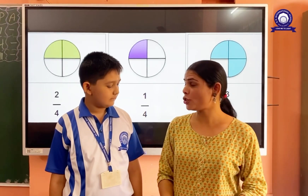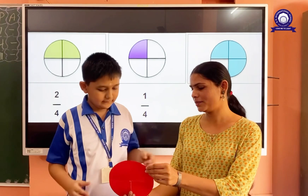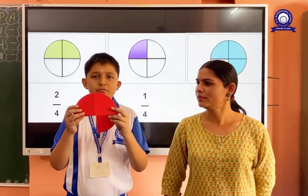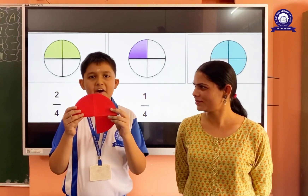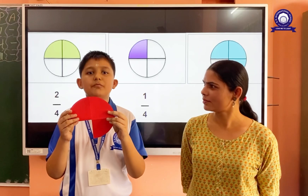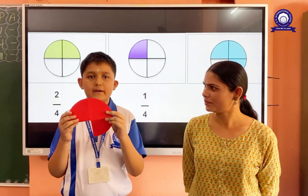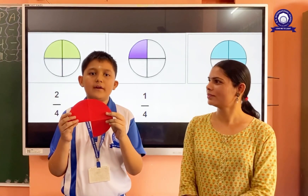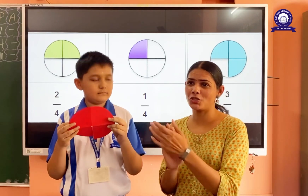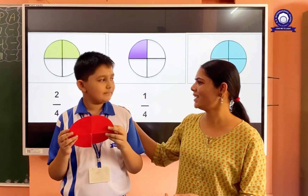Hi Panjshu. Will you show us what 3 quarters are? If a whole is divided into 4 equal parts and we take 3 of them, then the parts we have taken — that is called 3 quarters. Very good, Panjshu.